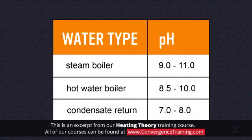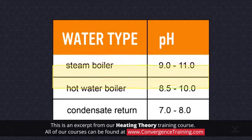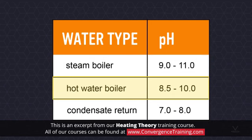For an effective chemical treatment system of boiler water, the pH in steam boiler water should be maintained between 9 and 11. The pH for hot water boiler water should be kept between 8.5 and 10.0. The pH of condensate return water for steam boiler systems should be maintained at 7.0 and 8.0.